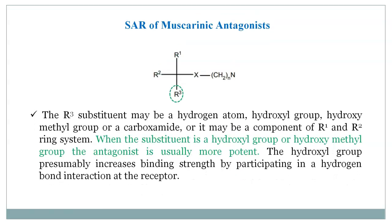The R3 substituent may be a hydrogen atom, hydroxyl group, hydroxymethyl group, or carboxamide, or it may be a component of the R1 and R2 ring system. When R3 is a hydroxyl group or hydroxymethyl group, the antagonist is usually more potent because the hydroxyl group increases binding strength by participating in hydrogen bond interactions at the receptor.